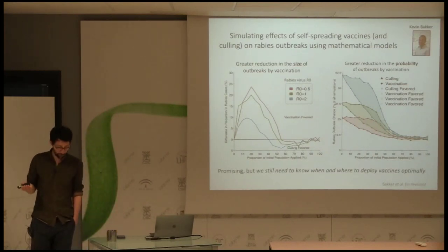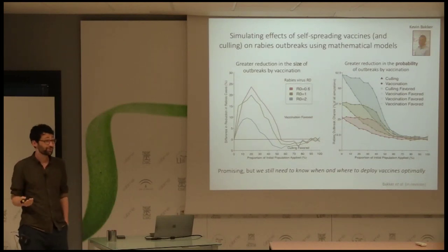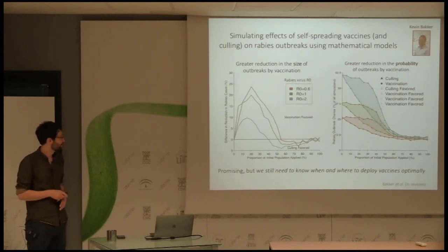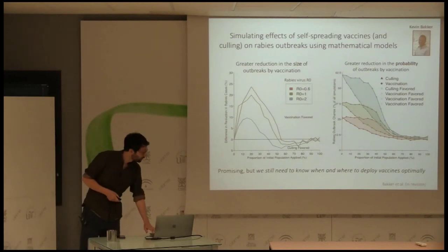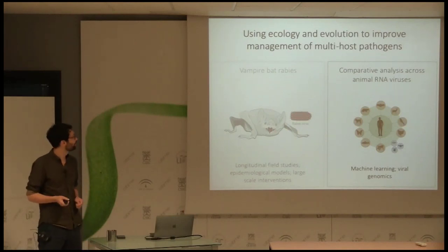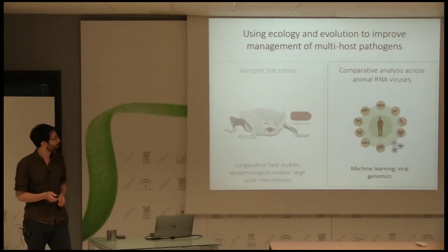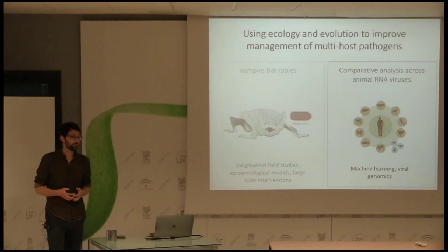We've found all this to be quite promising and are excited to pursue this line of research more, but the next thing we really need to know is how this is going to work on a landscape — we need better spatiotemporal models of rabies transmission. That's basically what I wanted to say about the vampire bat rabies work. At this point I'm going to shift gears quite a lot and talk about how viral genomics and machine learning can be integrated to make much broader inferences about the ecology of emerging viruses.